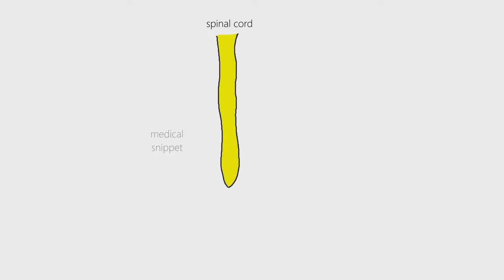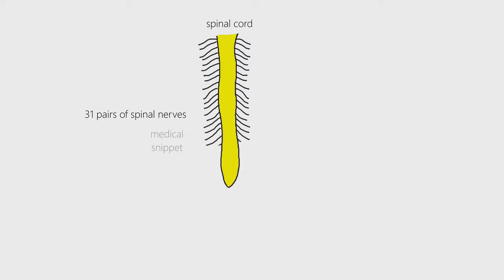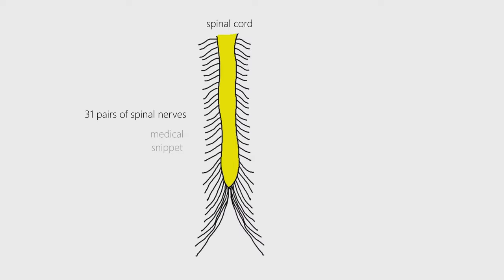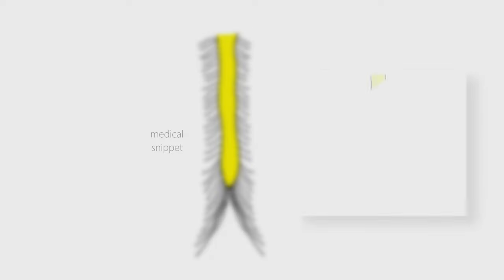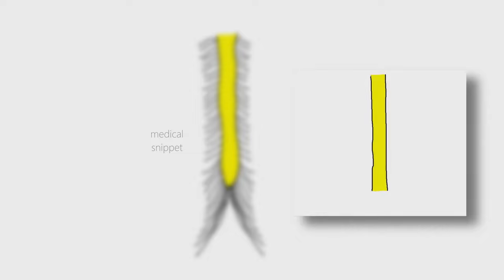There are 31 pairs of spinal nerves arising from the spinal cord. They exit via the intervertebral foramina from the vertebral canal.